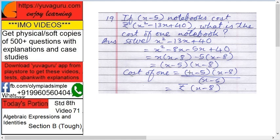Cost of one book equals x minus 5 into x minus 8 upon x minus 5 gets cancelled and remains x minus 8. So cost of one notebook is x minus 8. You can also do this by division method.